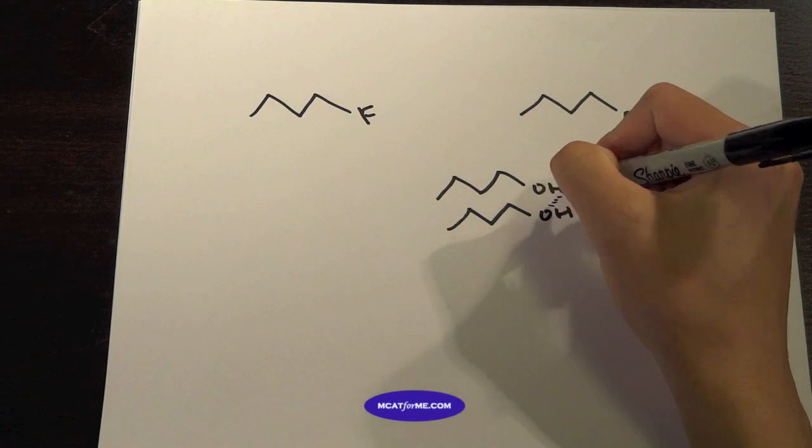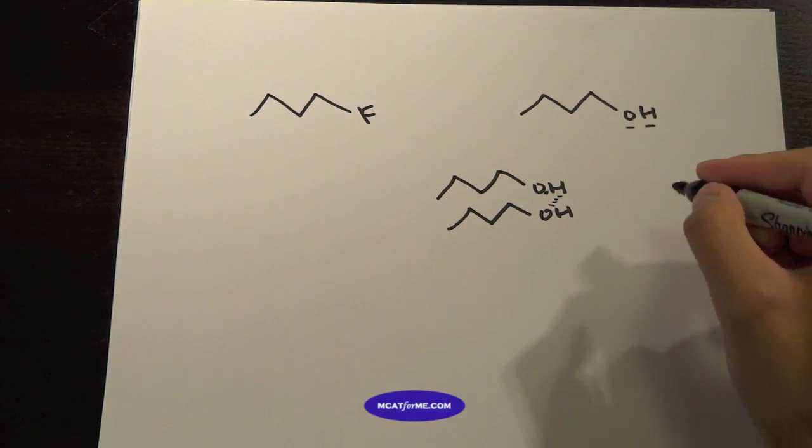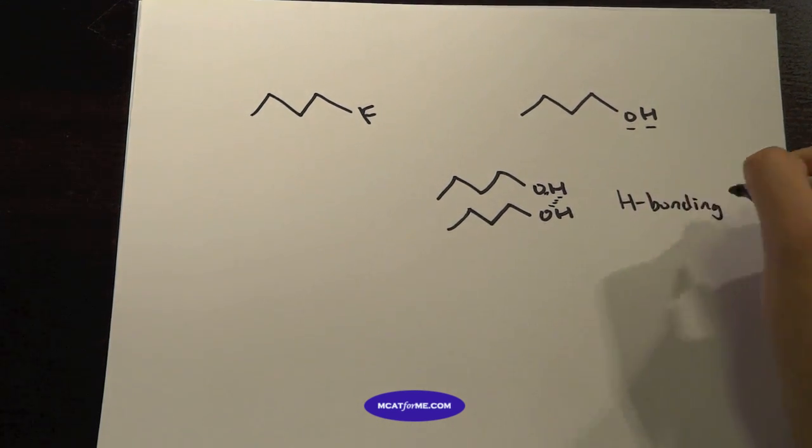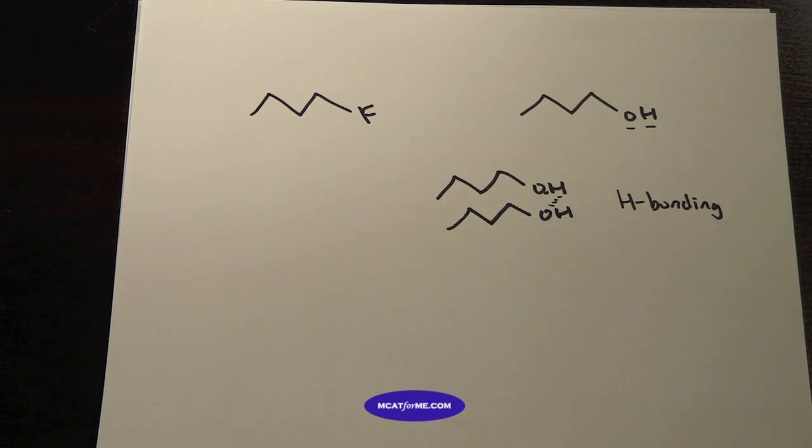We can do something like this. This is called hydrogen bonding and hydrogen bonding is the strongest of the weak intermolecular forces. So you have Van der Waals, you have hydrogen bonding, you have ions, things like that. And hydrogen bonding is one of the strongest.